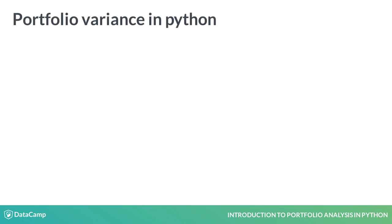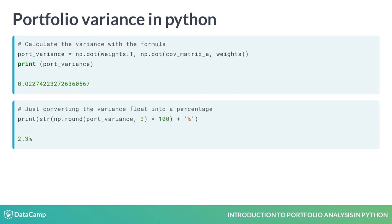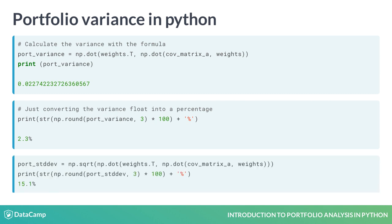Now, apply the formula and multiply the transposed weights with the covariance matrix, and then with the normal weights again. Make sure to use the dot multiplier here. The numpy dot function takes only two arguments to multiply, so start with the covariance matrix with the normal weights, and then multiply that whole thing with the weights transposed. That gives you the portfolio variance. Last, let's take the square root of the variance to calculate the standard deviation.